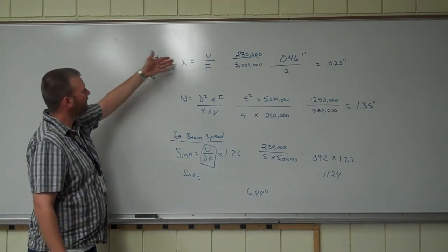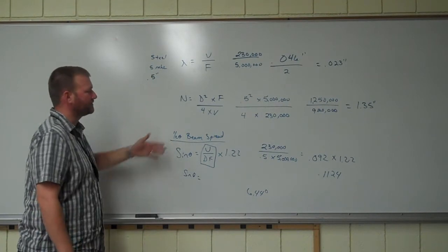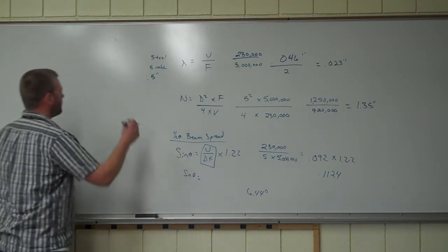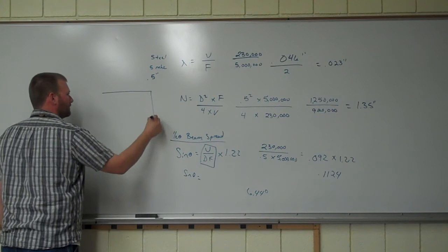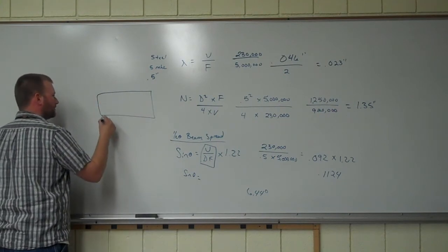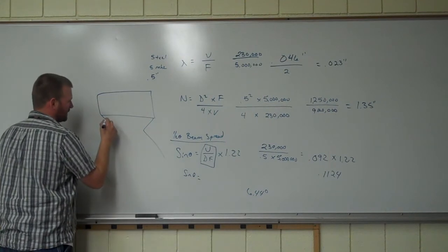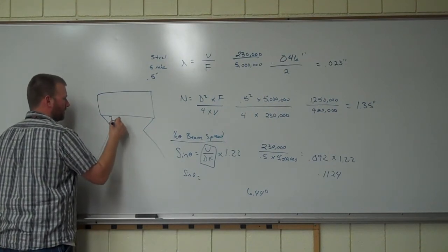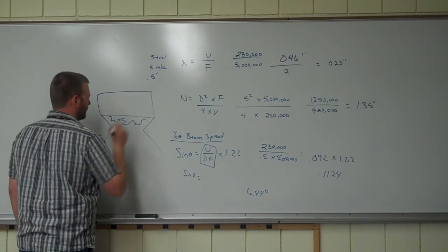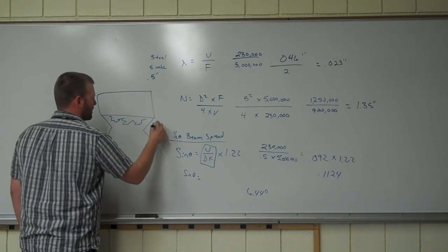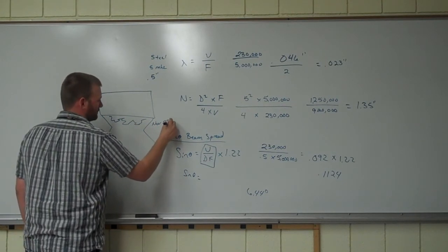Relatively simple. Wavelength, near field, beam spread. And really all that means is this. Here's your transducer. Comes down, kind of cones in, cones back out. Inside of here, all of this area where the waves are all inconsistent. That's the near field.